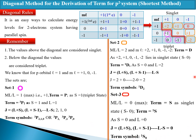The same sets can be observed using this method. In set one, where the maximum L is equal to 1, it will be a triplet state, meaning triplet P (3P). Where the maximum value is 2, the term will be singlet D (1D).